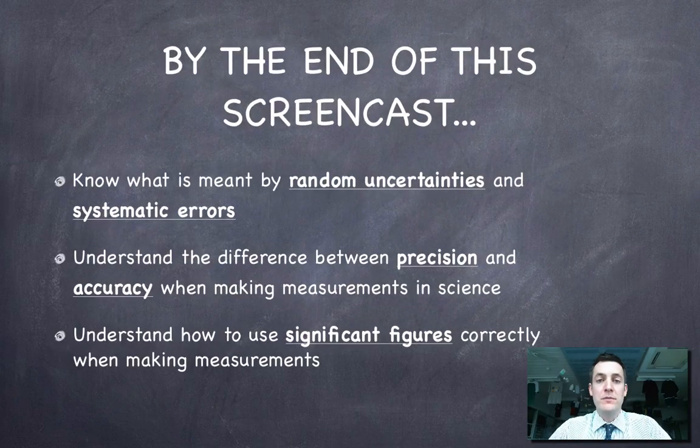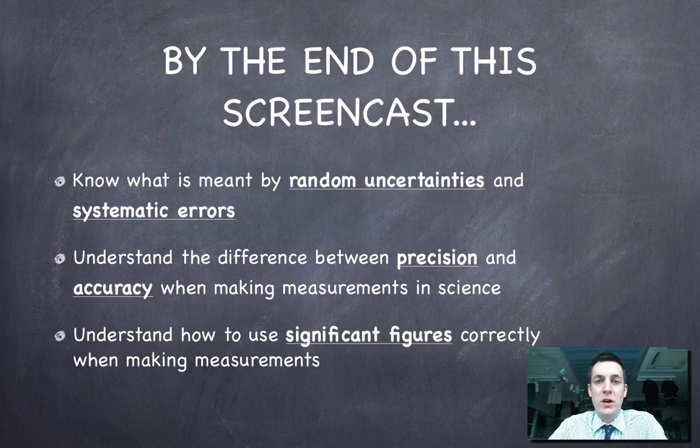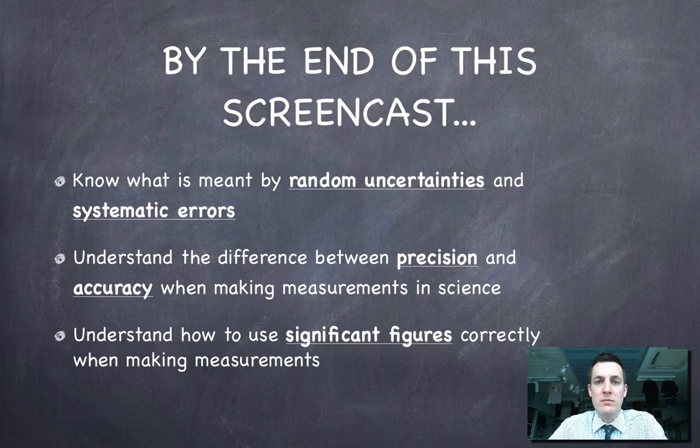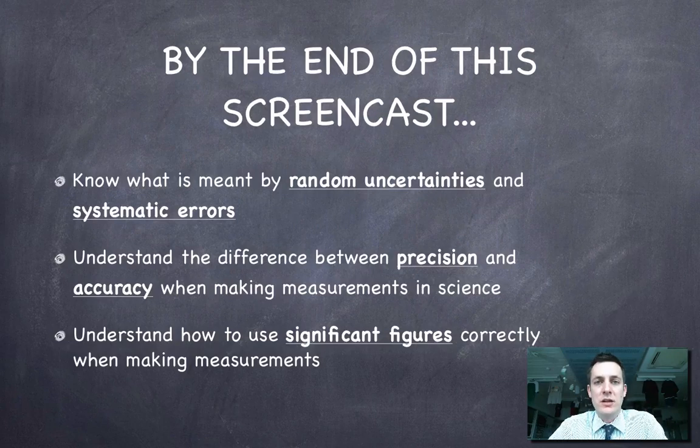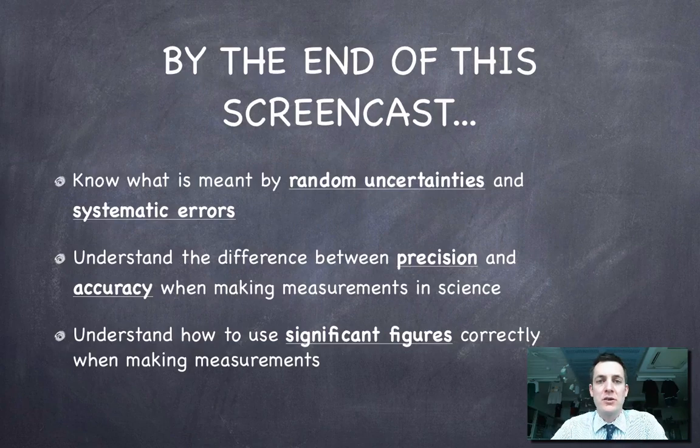By the end of this film, you'll know the difference between a random uncertainty or random error and a systematic error. You'll be able to describe the precision and accuracy of measurements and know that there's quite a significant difference between those two words when we use them in a scientific context, even though in common usage they're used almost interchangeably. And we're going to start looking a little bit about what we mean by significant figures, just in case this isn't something that's already clear to you.